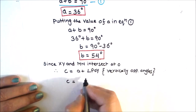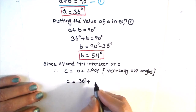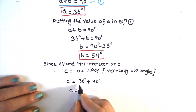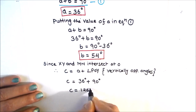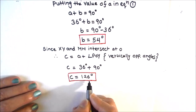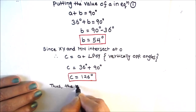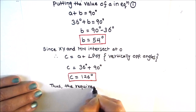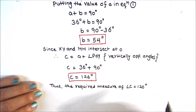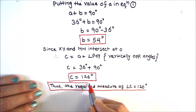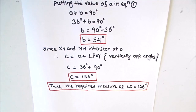So angle C equals 36 degrees plus 90 degrees, which equals 126 degrees. We have found the value of angle C as 126 degrees — this is the required measure of angle C and our final answer. I hope this video is helpful. If you like the video, please hit the like button and subscribe to my channel for more math videos. Thanks for watching.